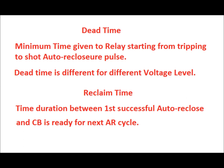Dead time is the minimum time given to the relay, starting from tripping to the auto reclose pulse sent to the circuit breaker. For example, after the relay sends a trip signal and the circuit breaker opens, it waits for a certain period defined at the relay, after which the relay sends an auto reclose pulse to the circuit breaker. This time duration is called dead time, and it differs for different voltage levels.